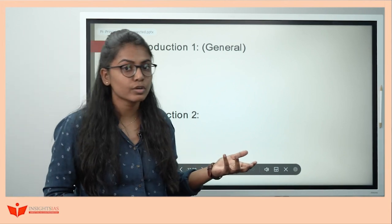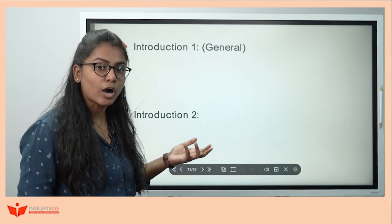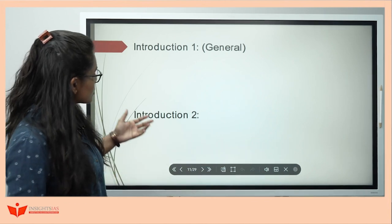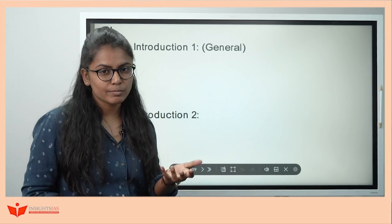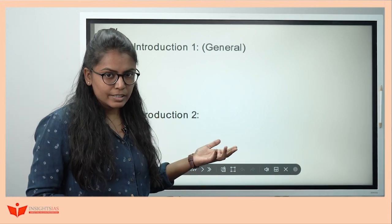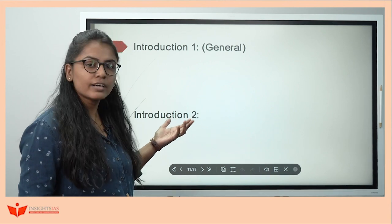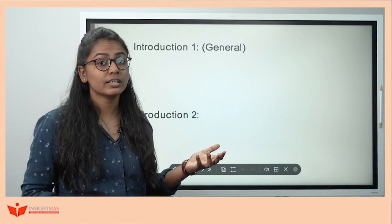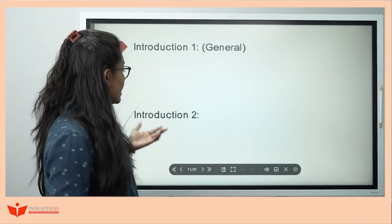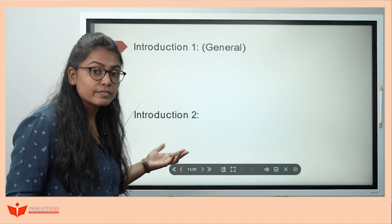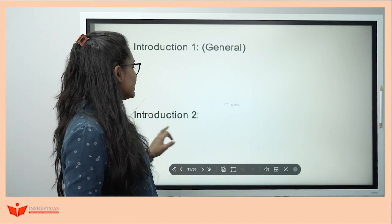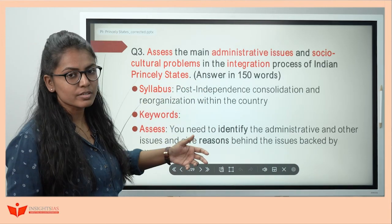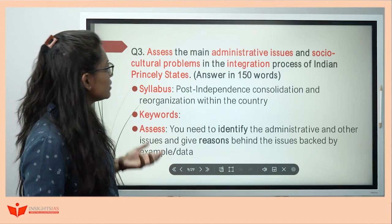For a knowledge-based introduction, you can write: 'Princely states were semi-autonomous regions ruled by native rulers and indirectly under British authority. There were nearly 562 princely states covering 40% of the landmass. While integrating them, there were some administrative and socio-cultural problems because of which the integration process was a bit tricky.' This type of introduction you can also write.